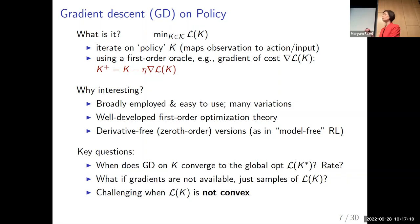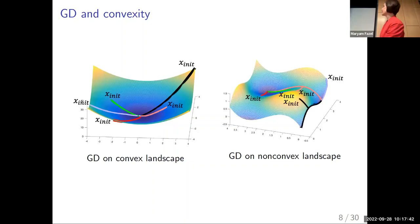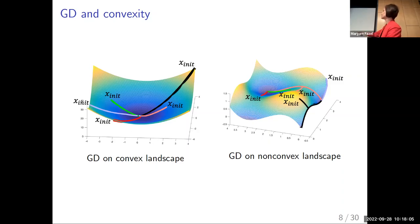We can also connect to derivative-free or zeroth-order optimization frameworks, which gets us close to model-free RL where you can only evaluate the loss at different points rather than compute gradients. Key questions are: when does gradient descent on K converge to the globally optimal K*, and what is the rate of convergence? These questions would be easy if the problem were convex in K, but in general it's not. For a convex smooth loss, gradient descent from any initial point converges to the global minimum. But with a non-convex landscape, you can have local minima and convergence is not guaranteed.